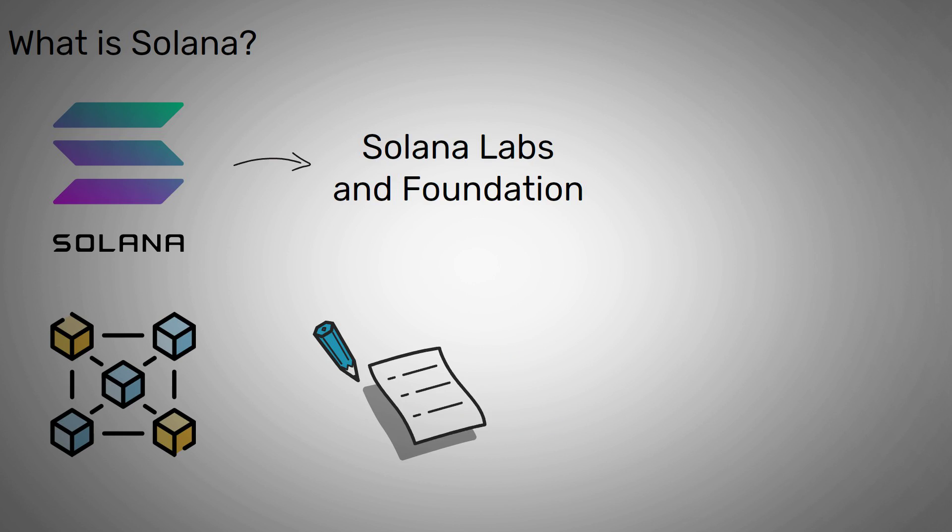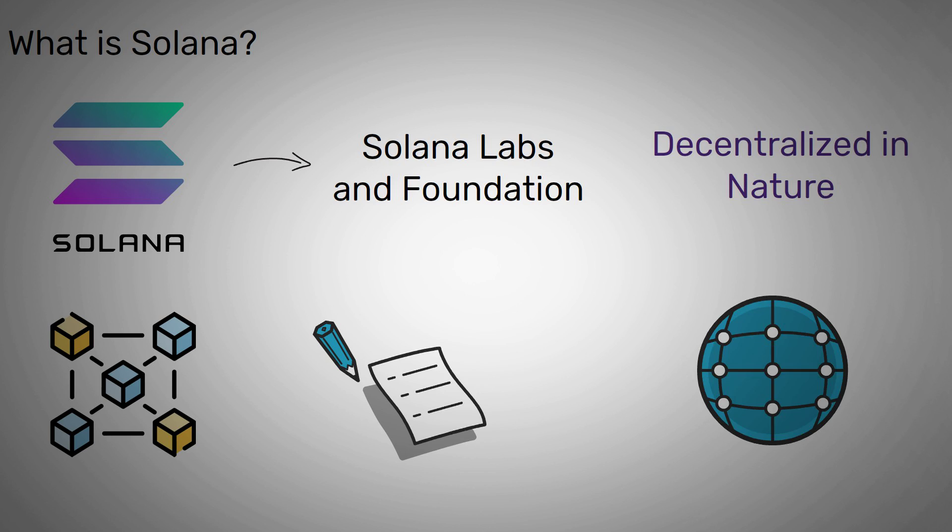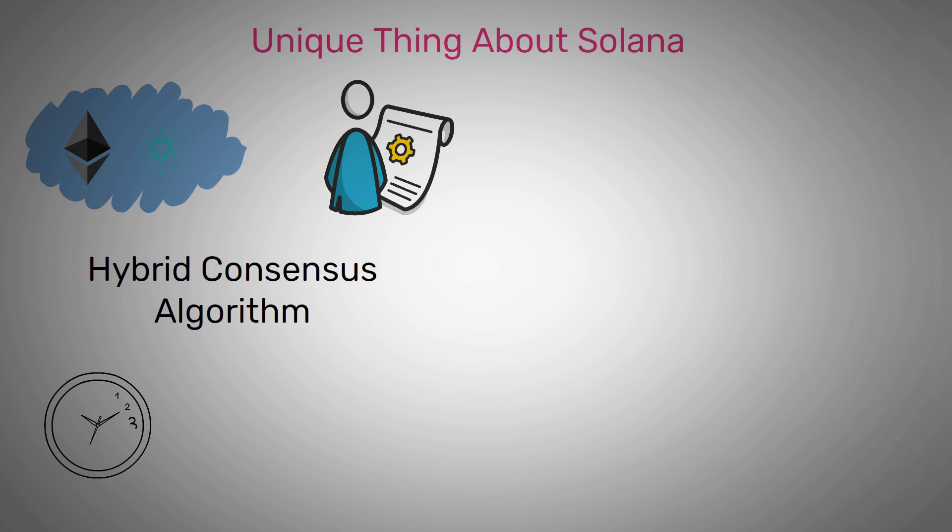One unique thing about Solana is that unlike other popular blockchains, it achieves consensus with the help of a hybrid consensus algorithm that combines Proof of History and Proof of Stake, enabling the network to sustain a throughput of up to 50,000 transactions per second.